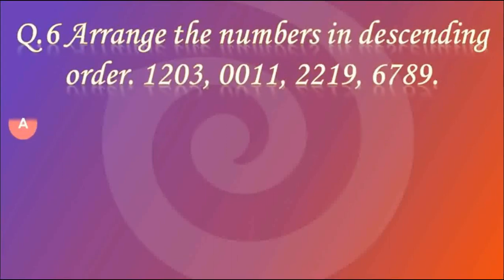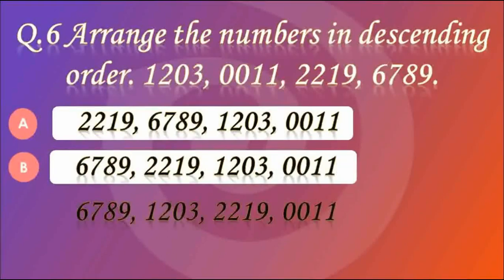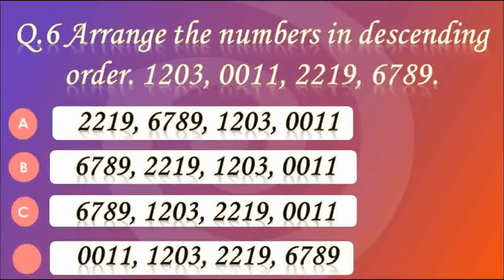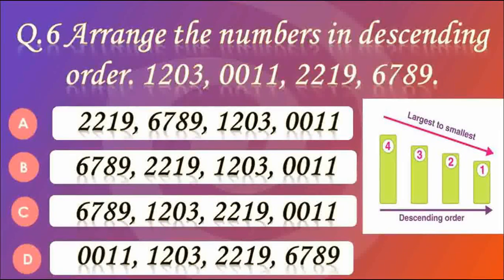Question number 6. Arrange the numbers in descending order. You can see the numbers on the screen. Answer B — 6789, 2219, 1203, 0011. Descending order means from largest to smallest. The largest number is 6789, then 2219, then 1203, and then 0011.